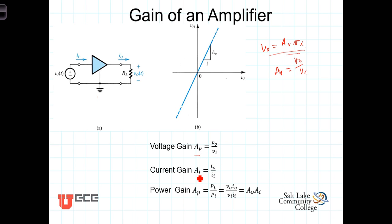Similarly, you'll have A_i for the current gain. And in those instances where we're actually talking about the gain of the power, A_p will be the power at the load divided by the power in or the ratio of the load power to the source power. Of course, power is just equal to I_out times V_out divided by the power at the input, which is I_in times V_in.